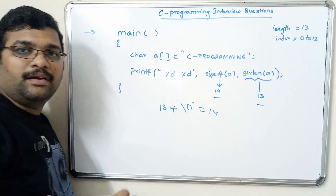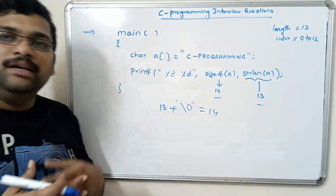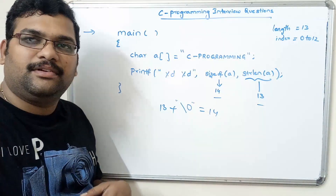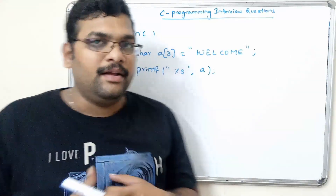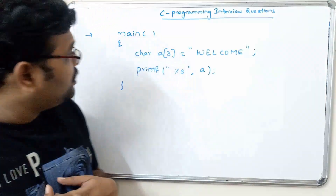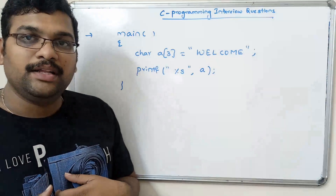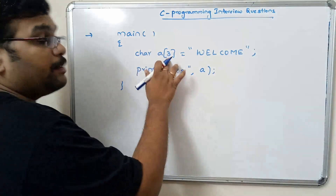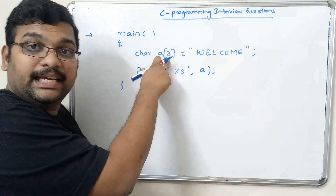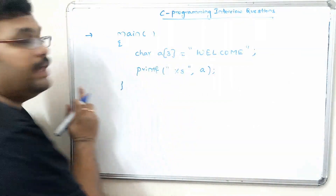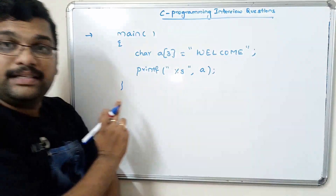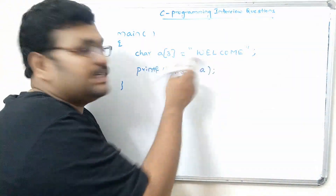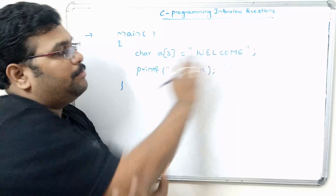Hope you understood the difference — a small difference between sizeof and strlen. Let us move on to the next question. This second example is also regarding arrays. Here we have 'a' of size 3, so we are mentioning the size explicitly, and then we are also initializing it — so this is both declaration and initialization.